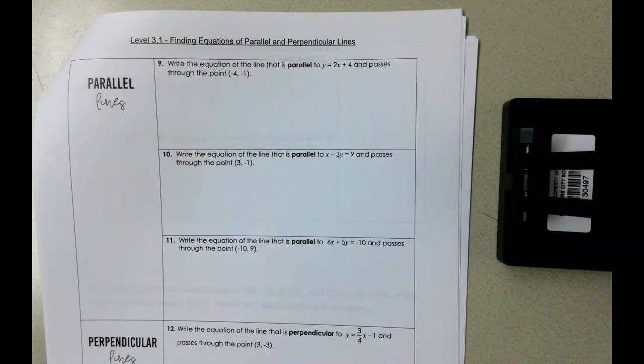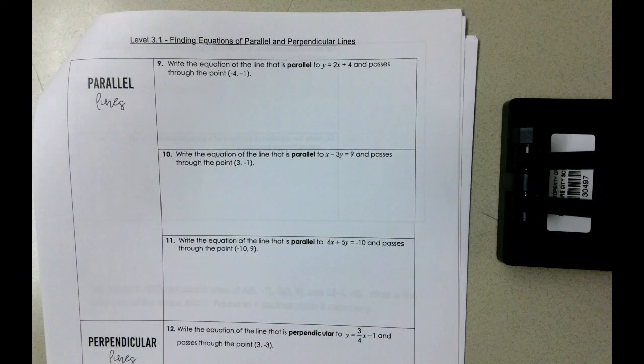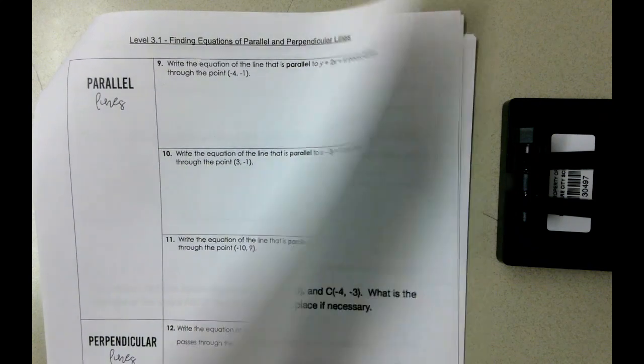Today we're going to look at level 3.1 notes, finding equations of parallel and perpendicular lines. At the bottom of the paper here you've got a little bit of space and a couple things that you might want to write down that may or may not be helpful to you as we work on pages 15 and 16.